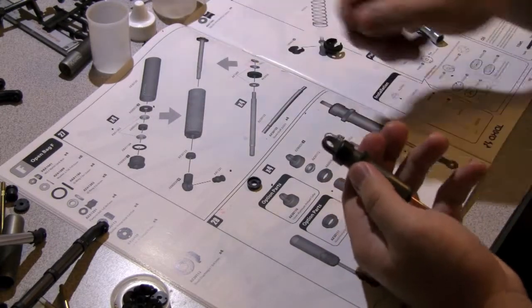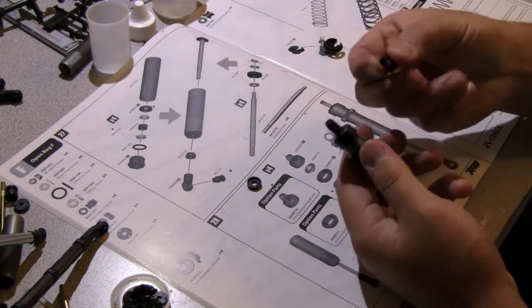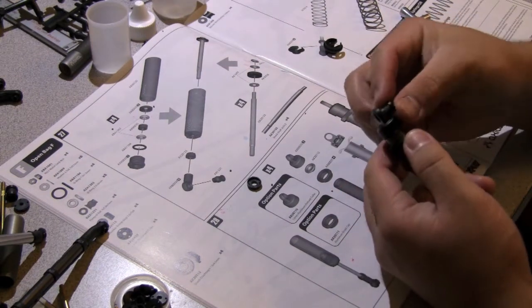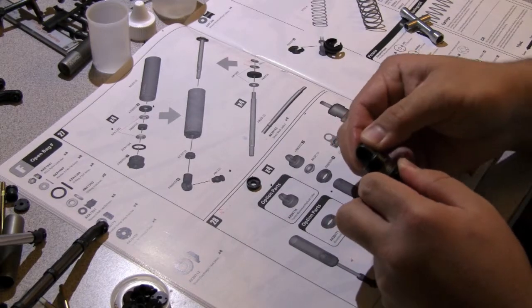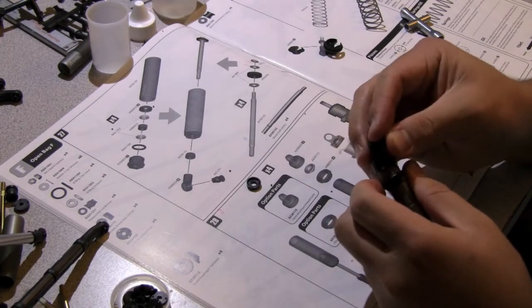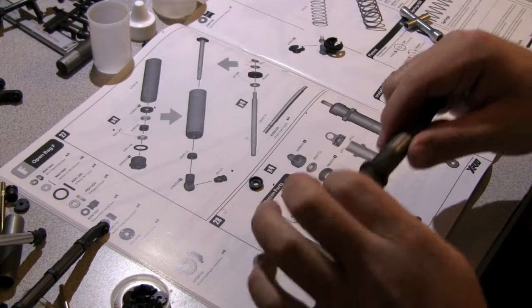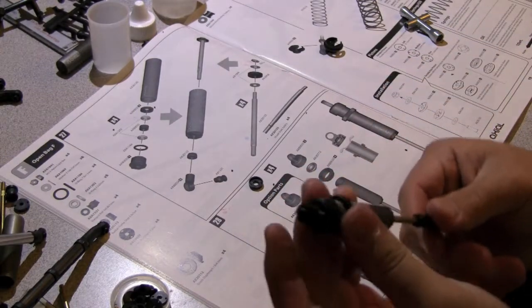now what you want to do to complete it is get the silicone shock bushing and just slip it through the shock hole. All right, so once you get that on, it's pretty easy from there, but I'll continue.